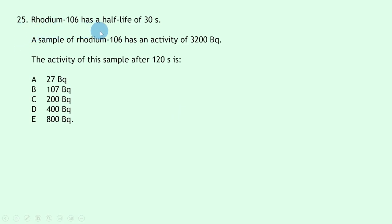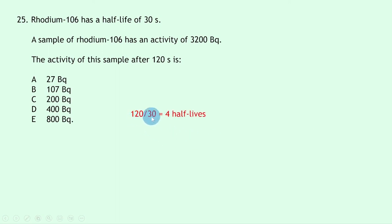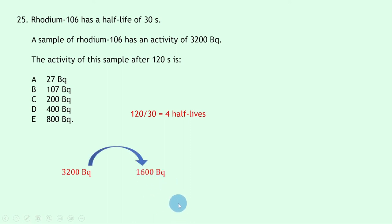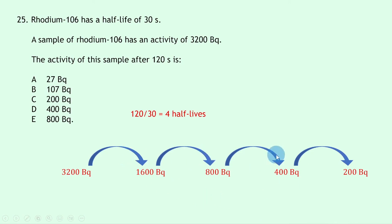Question 25: rhodium-106 has a half-life of 30 seconds and initial activity of 3200 becquerels. We need the activity after 120 seconds. Number of half-lives = 120 ÷ 30 = 4. Halving four times: 3200 → 1600 → 800 → 400 → 200 becquerels. The final activity is 200 becquerels, which is answer C.